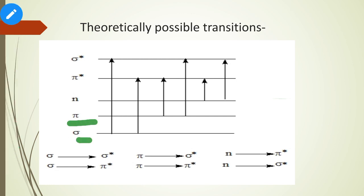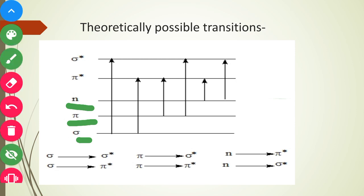The transitions are: sigma to sigma*, sigma to pi*, pi to sigma*, pi to pi*, n to pi*, and n to sigma*. Out of these possible transitions, we will discuss which type of energy is required for each, and which ones actually appear in a UV-visible spectrum.